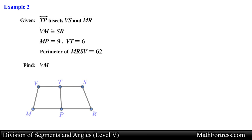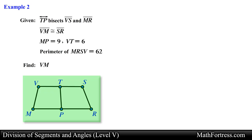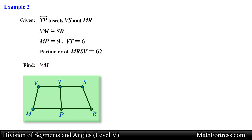Alright, let's take a look at the next example. Given that line TP bisects segment VS and segment MR, segment VM is congruent to segment SR, the length of segment MP is equal to 9, the length of segment VT is equal to 6, and the perimeter of figure MRSV is equal to 62, find the length of segment VM. In this problem we are provided with a diagram of a figure along with various geometric relations, and we are asked to find the length of a particular segment.